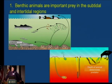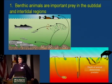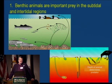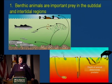One of their major functions is as prey for birds, fish, and crustaceans in the system. It's not just what happens in the intertidal — it's also what happens in the subtidal. Depending on the predator, predators can structure the benthic community, so we get major changes in the community as a result of seasonal predation from birds in particular.